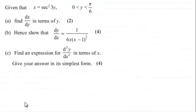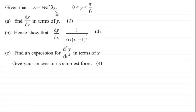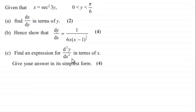Hi. Before we start part C, just to recap: if you were watching the previous video, I showed you parts A and B. We were given that x equals x squared times 3y, for y between 0 and pi upon 6, and asked to find dx/dy in terms of y. Then go on to show that dy/dx was 1 divided by 6x times (x minus 1) to the power half. Now for part C, we've got to find an expression for d²y/dx² in terms of x, and give your answer in its simplest form for four marks.